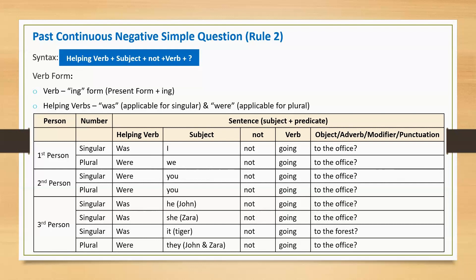Third person plural: Were they not going to the office? In place of pronoun 'they', we can mention the names — Were John and Zara not going to the office? In the next slide, I will compare rule 1 and rule 2 with examples.